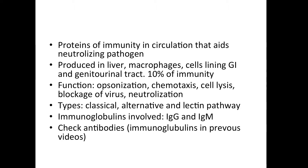These account for approximately 10% of your immunization — what your body will do back to the pathogen. They can be produced by the liver, macrophages, and some mucosal cells in the lining of the GI or the genitourinary tract.